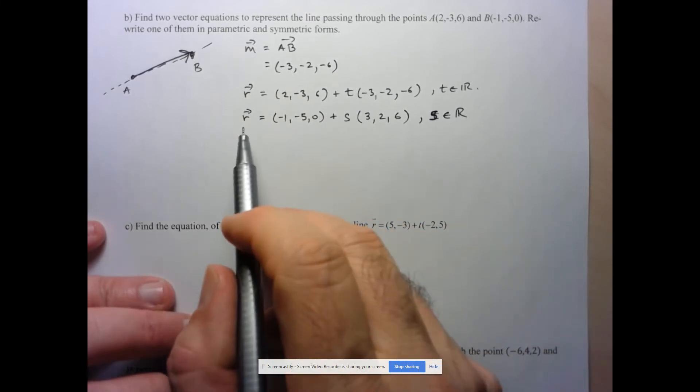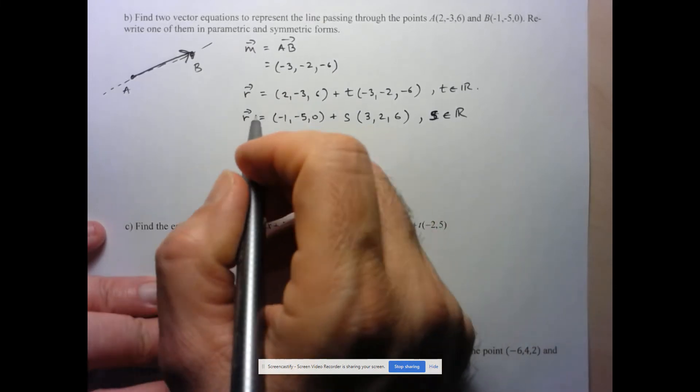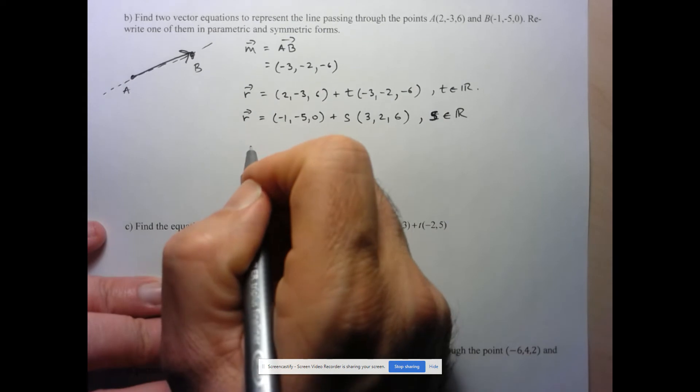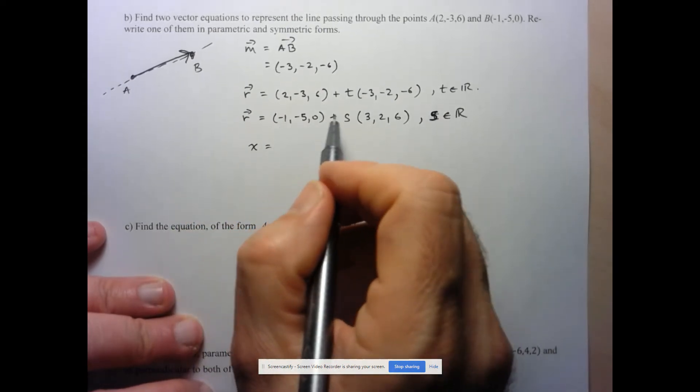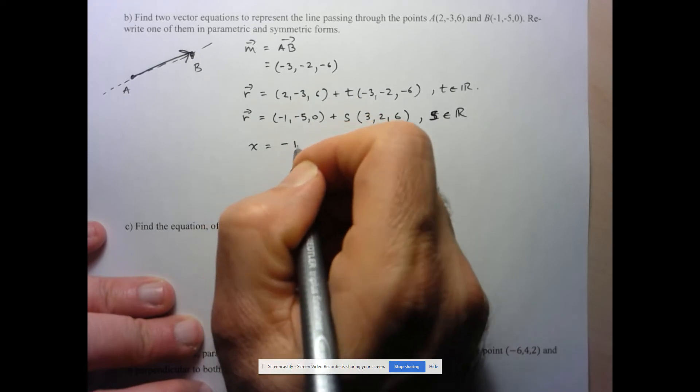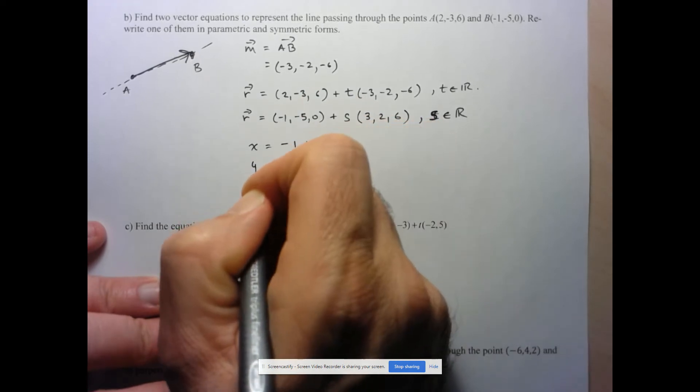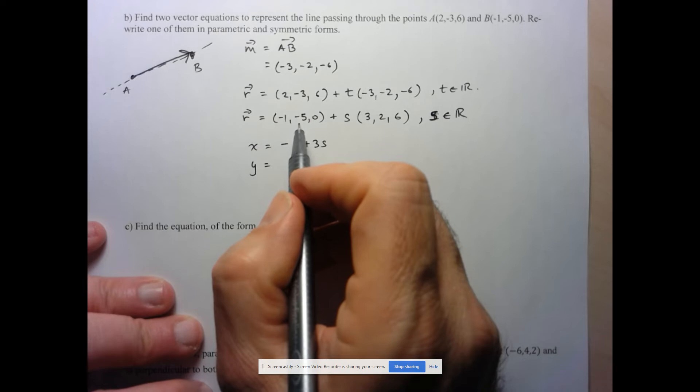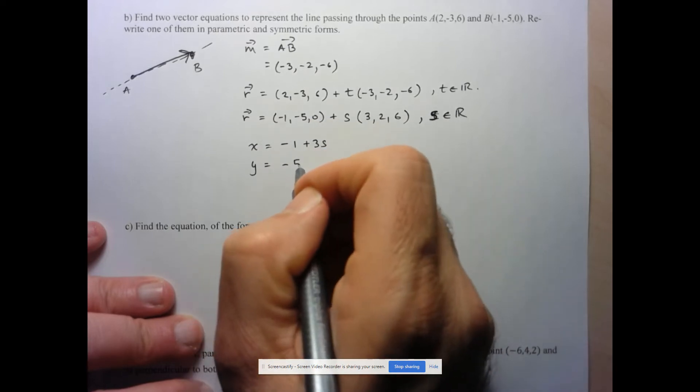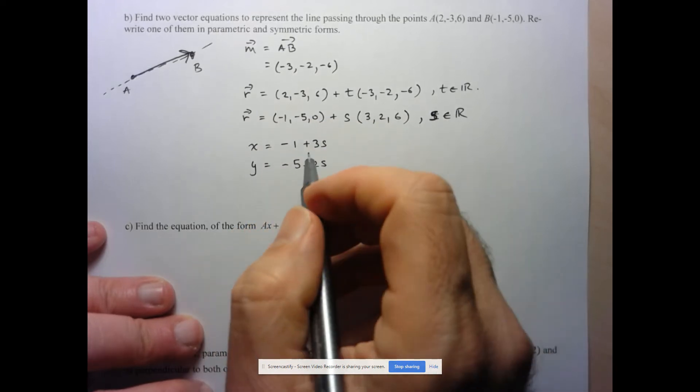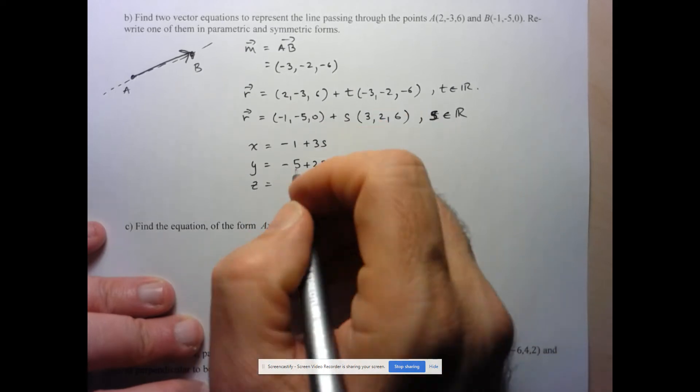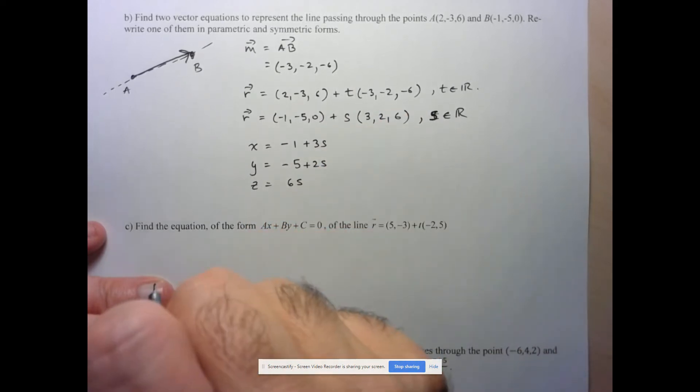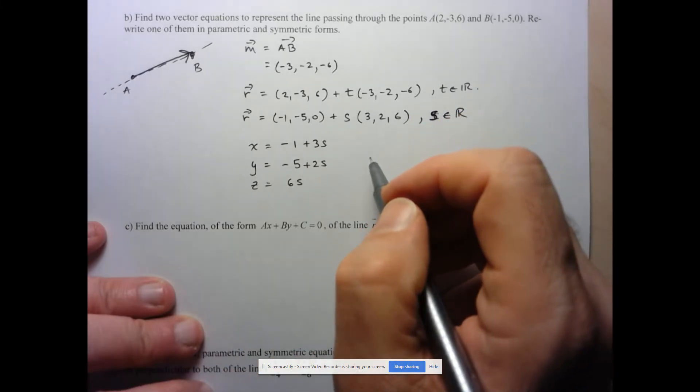So now let's quickly take this and write this in parametric form. So I'll use the second one here since it's closest. So I can write in parametric form that X is equal to negative 1 plus 3S. Y is equal to negative 5 plus 2S. And here we've got Z is going to be equal to 0 plus 6S, so 6S.